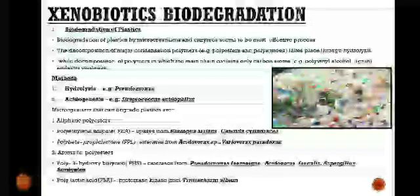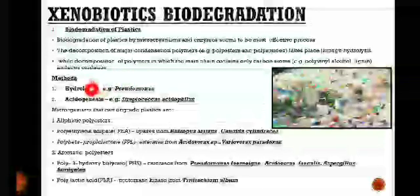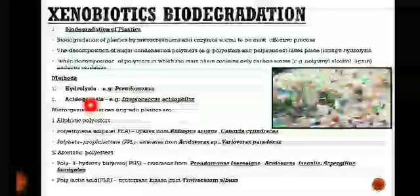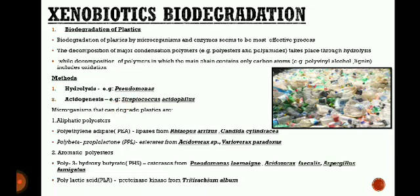Oxidation can be followed by hydrolysis of the products of oxidation. The methods of biodegradation of plastic are hydrolysis, acetogenesis, methanogenesis, etc., but here we will only discuss hydrolysis and acetogenesis. Hydrolysis is the process of breaking the chain and dissolving the polymers into smaller fragments; an example organism is Pseudomonas. Acetogenesis results in further breakdown of the remaining components by acetogenic fermentative bacteria into ammonia, ethanol, carbon dioxide, and hydrogen sulfide; an example is Lactobacillus acidophilus.